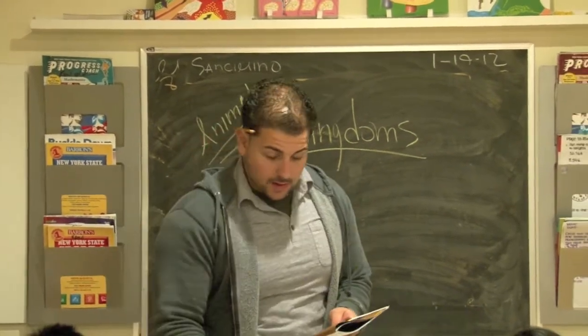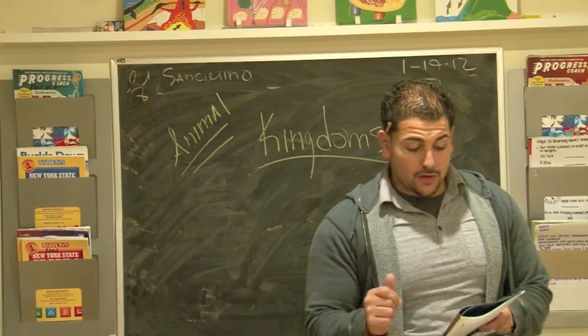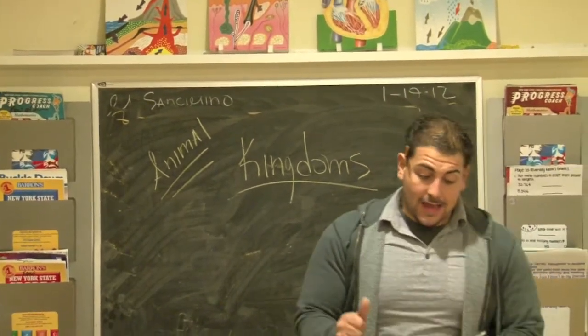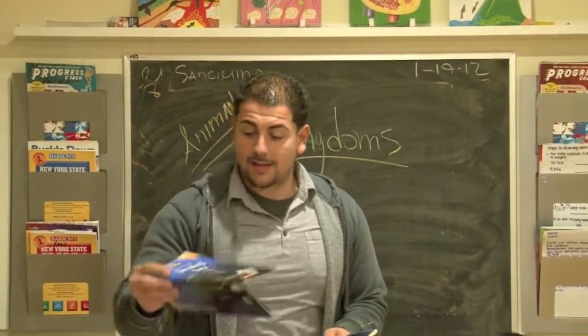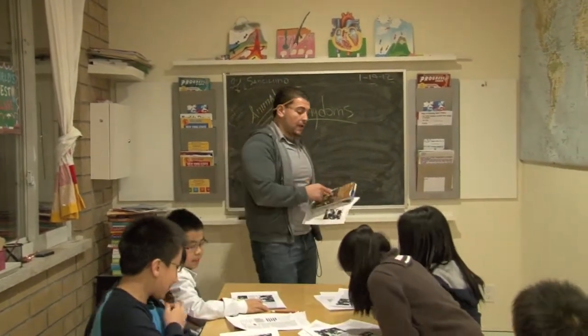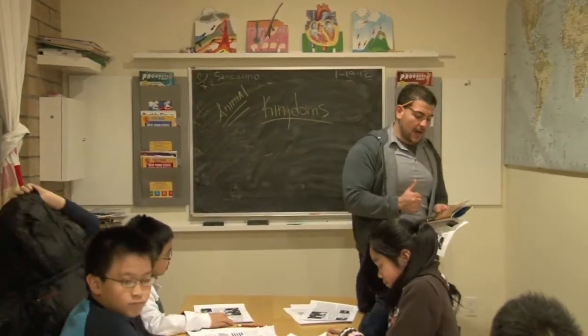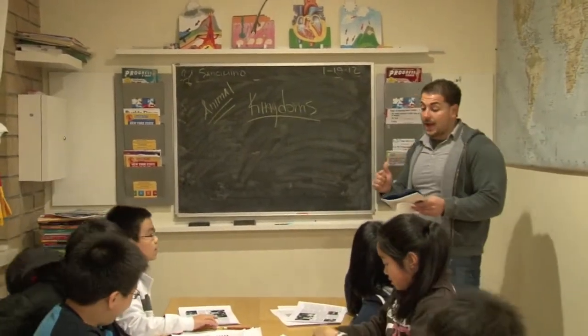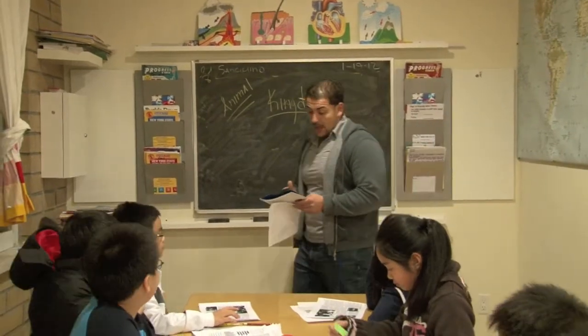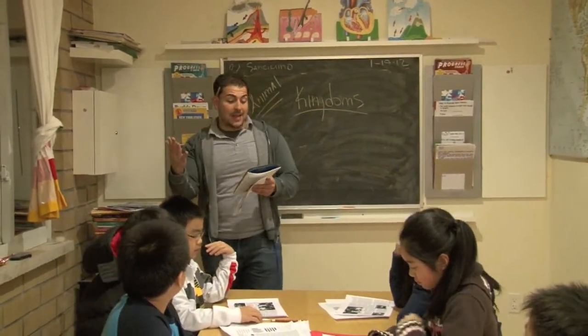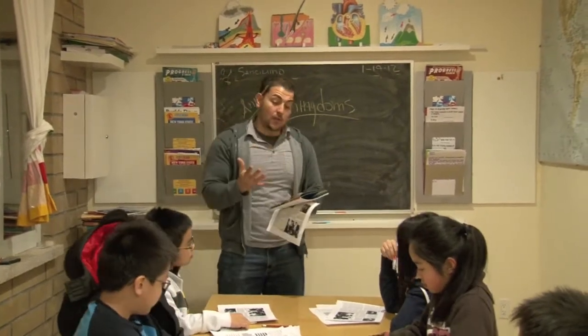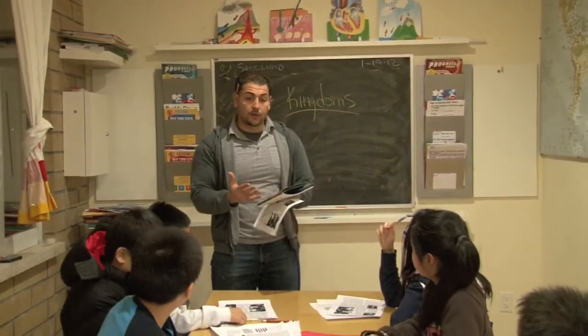A howler monkey calls out from a tree in the rainforest. We're talking about animal kingdoms and scientific classification. The book says: a howler monkey calls out from a tree in the rainforest — he's just one kind of animal that lives here. There are many more, and about a bazillion different types of plants too. How do scientists keep track of these different kinds of living things in the world? Well, they classify them according to kingdoms.